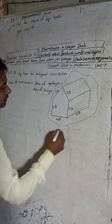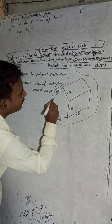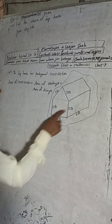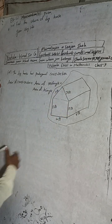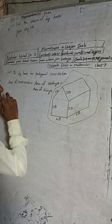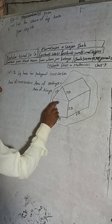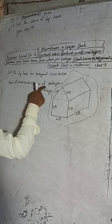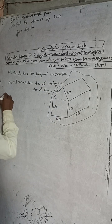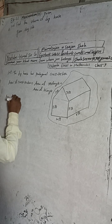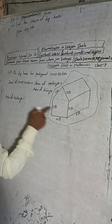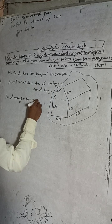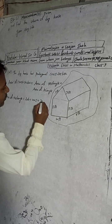By doing a construction — joining across the pentagon — this will form a rectangle shape. The rectangle has dimensions 5 cm and 4 cm. Area of rectangle equals length into breadth, that is 4 into 5, which equals 20 square feet.